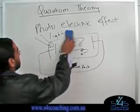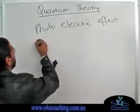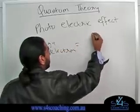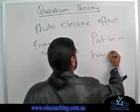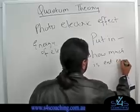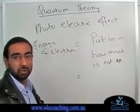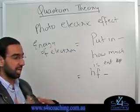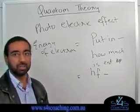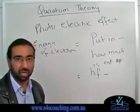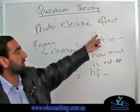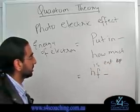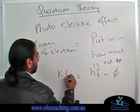The energy that an electron can have is equal to how much the photon put in minus how much was used up. How much you put in is the energy the photon had, equal to hf. How much was used up is the work function φ — the minimum energy needed for the electron to make the jump. For example, if the photon has 10 units of energy and 3 units are taken up by the work function, the electron has 7 units of kinetic energy left.